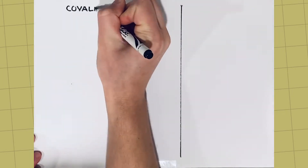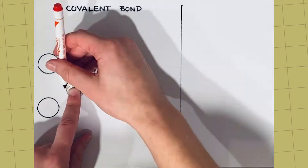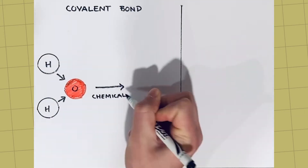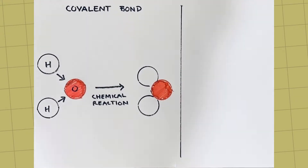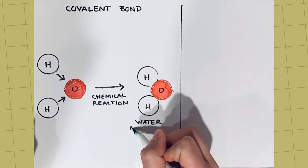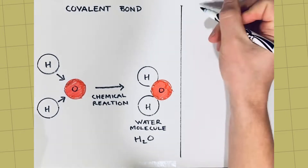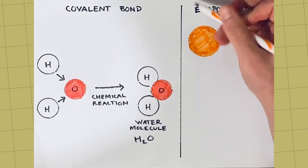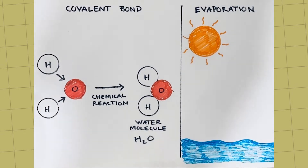Gas atoms in the atmosphere can stick or bond together to form molecules. In chemistry this is called a covalent bond. For example, two hydrogen atoms can bond with one oxygen atom to create a water molecule. When liquid water evaporates it rises into the atmosphere as a gas or water vapor.